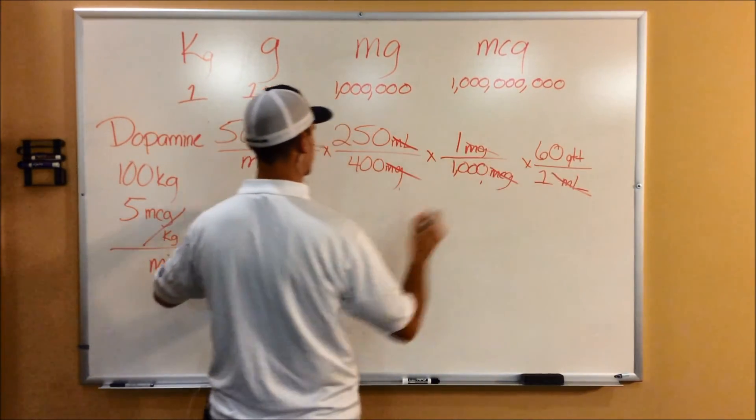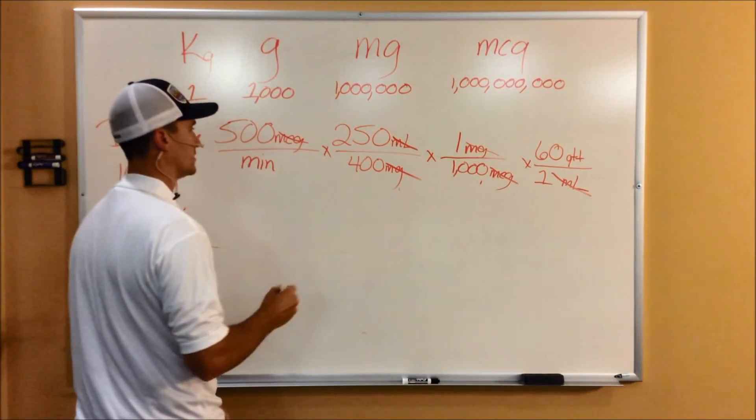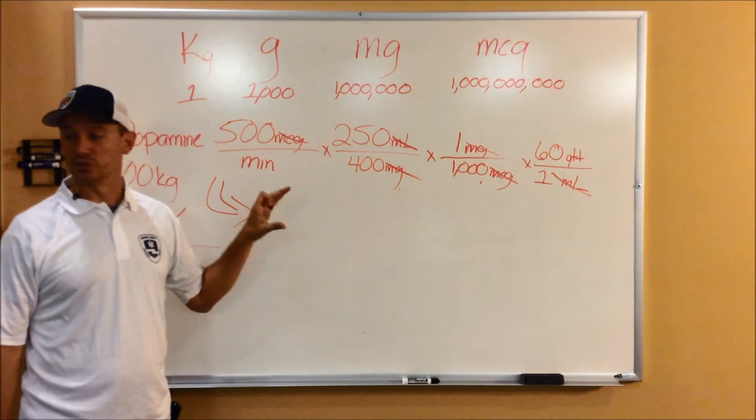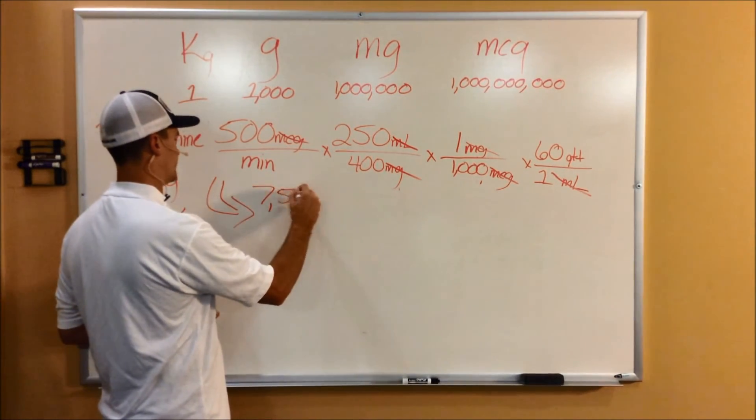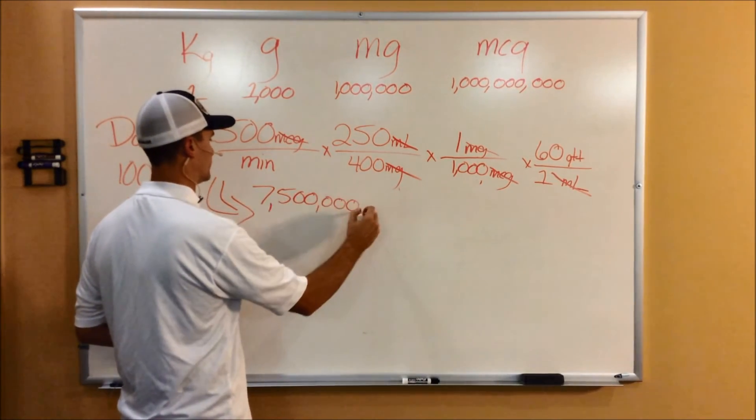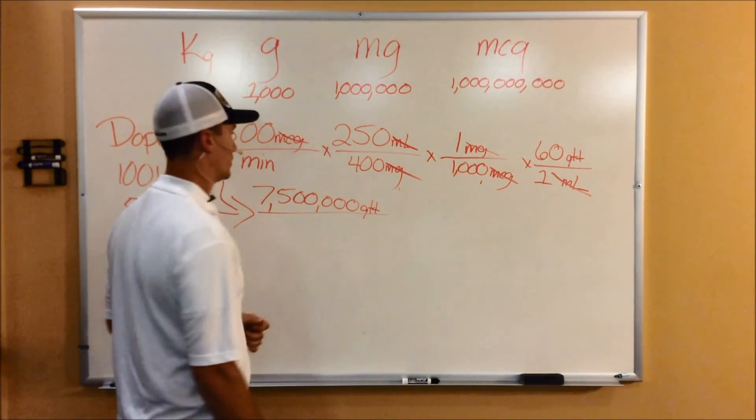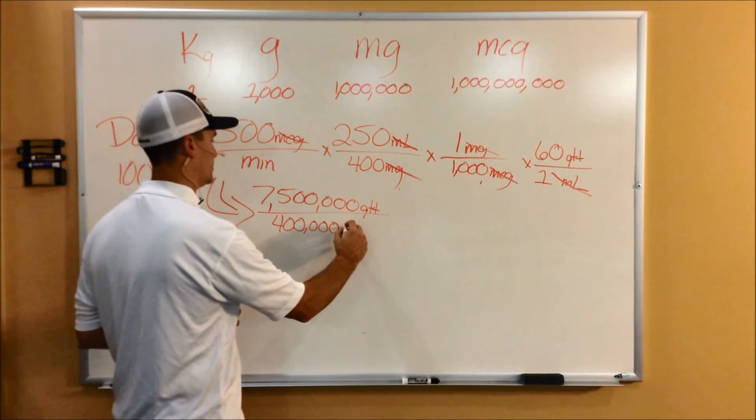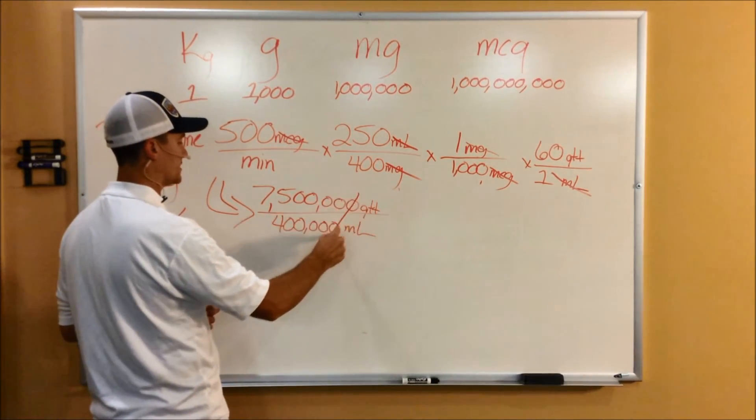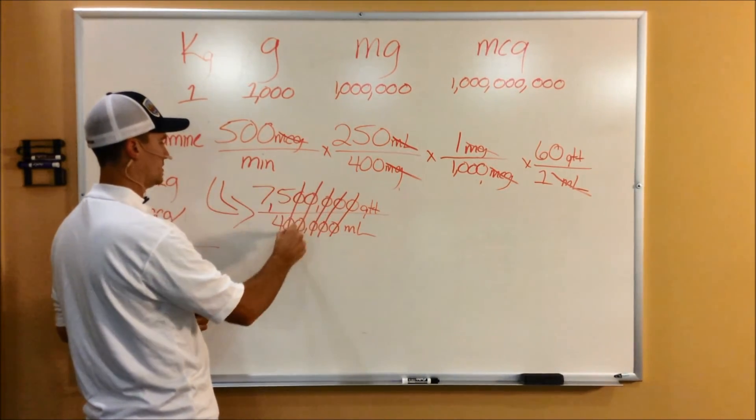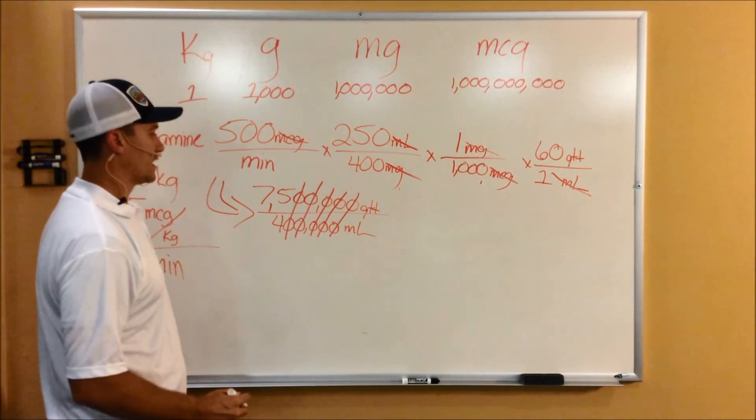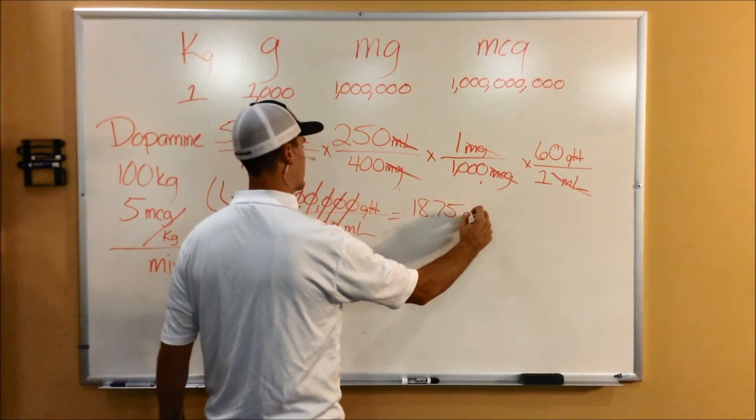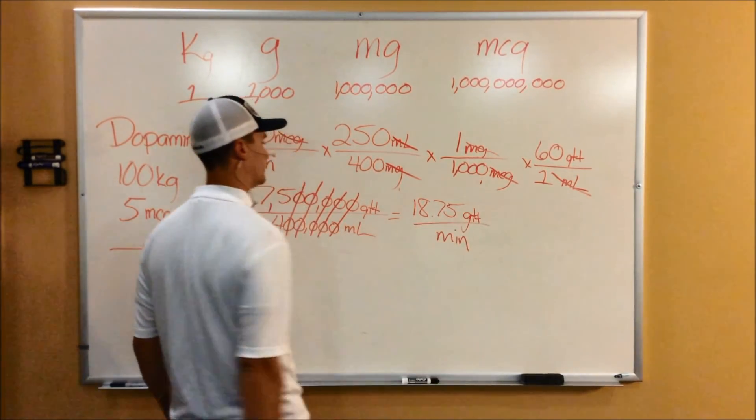So on the top, everything's crossed out except drops. On the bottom, everything's crossed out except minutes. So now, you can solve for the math. So two methods you can do here. You can draw this out really lengthy to where it's 7,500,000 drops over 400,000 milliliters. So again, we can start crossing out zeros. So taking these out together, these, these, those, and those. So now, you're left with 75 divided by 4, which is 18.75. 18.75 drops per minute. 18.75, okay?